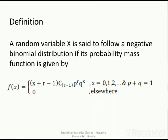Now let us define the negative binomial distribution. A random variable x is said to follow a negative binomial distribution if its probability mass function is given by: f(x) = (x+r−1 C r−1) · p^r · q^x, where x varies from 0, 1 to infinity, p + q = 1, and equal to 0 elsewhere.